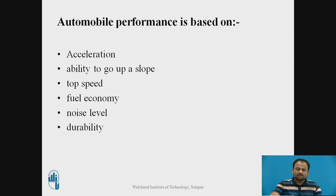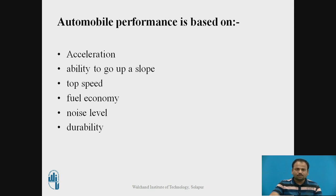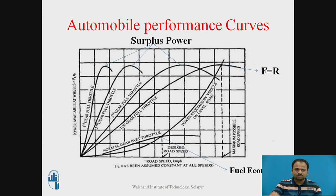Automobile gearboxes are basically designed for maximum acceleration and these gearboxes are used for variable speeds. Accordingly, the engine power is utilized. Here, 80% of power of an engine is used to develop an extra 20% of torque. Therefore, we need to discuss a performance curve — how the automobile performs in different gears.